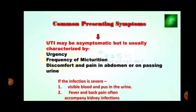UTI may be asymptomatic, but it is usually characterized by some common symptoms: urgency, frequency of urination — urination meaning the removal of urine — discomfort and pain in the abdomen or on passing urine. If infection is severe, there may be visible blood and pus in the urine, and fever and back pain often accompany kidney infections.